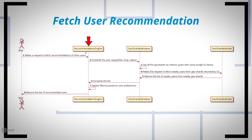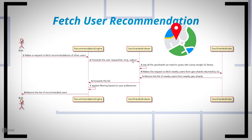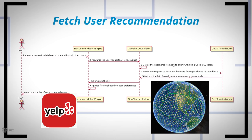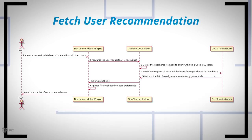The indexer takes the location and radius information of the user and figures out which geo-shards to query for the list of users. The secret sauce for getting the correct geo-shard lies in a good geo library — Tinder uses Google's S2 library, which has stood the test of time and is also used by apps like Yelp for restaurant recommendations. The indexer queries the geo-sharded index, fetches a list of users, and sends it back to the recommendation engine, which returns it to the user's phone.